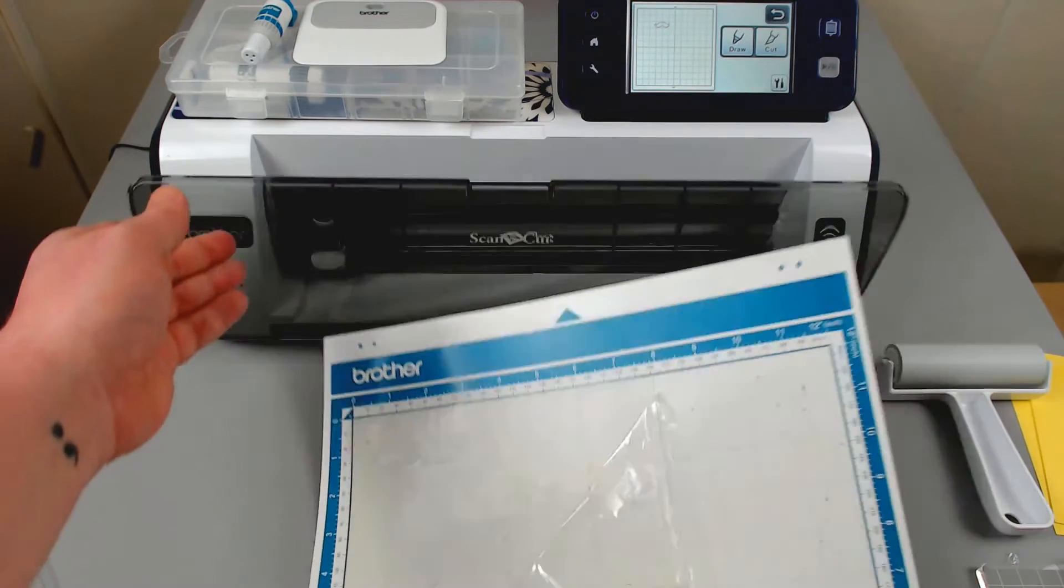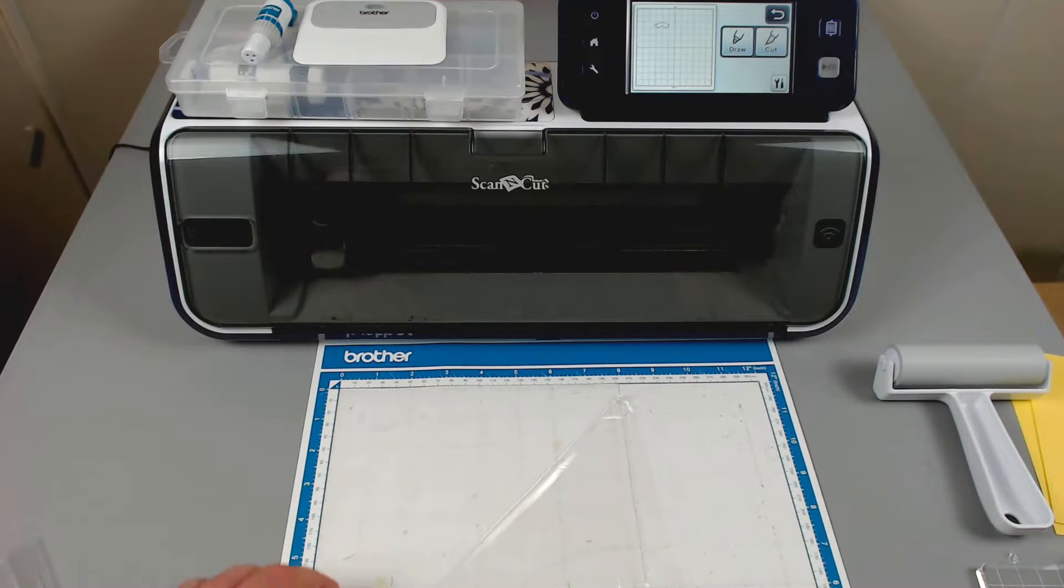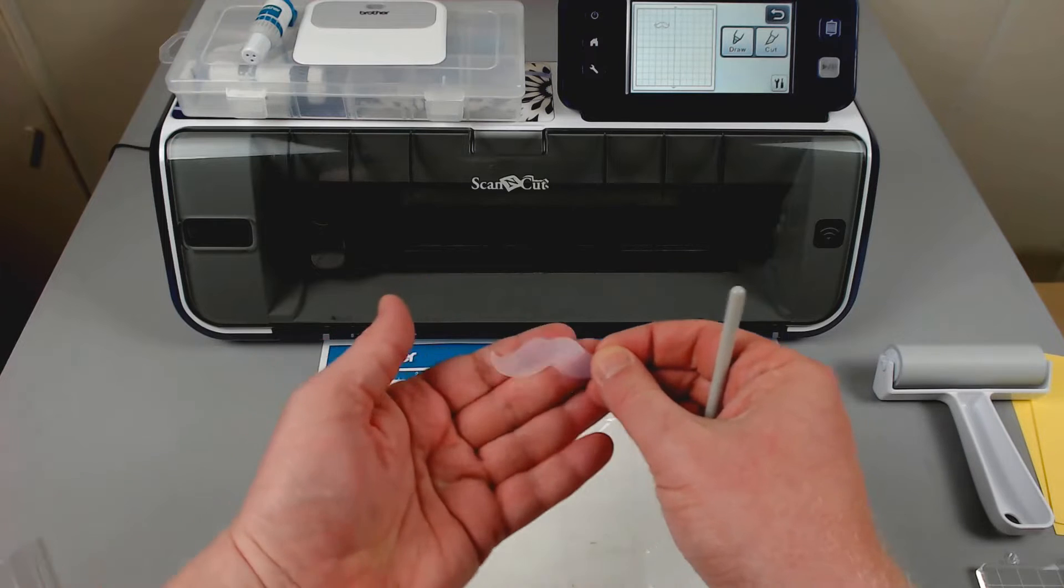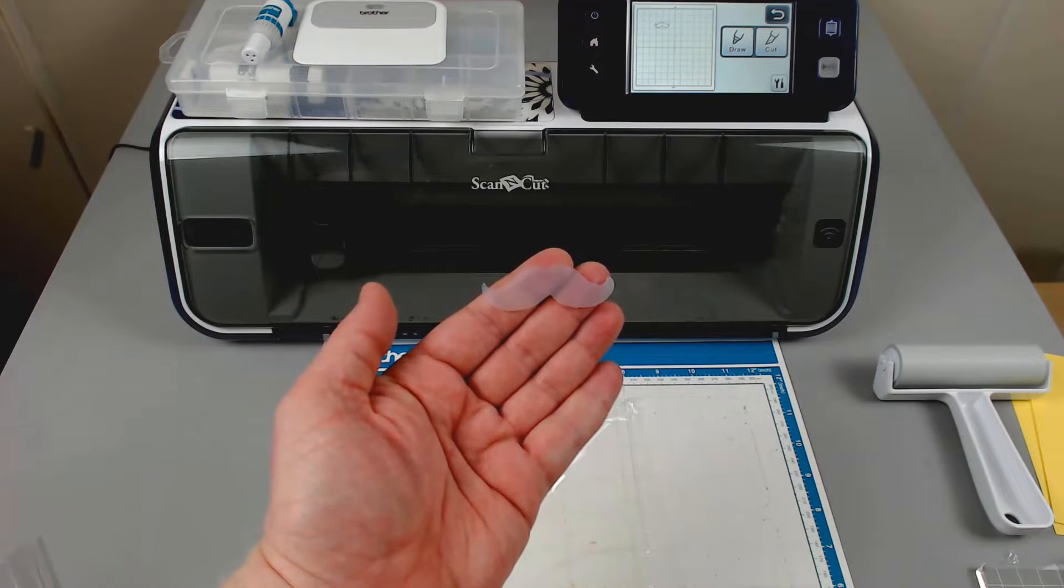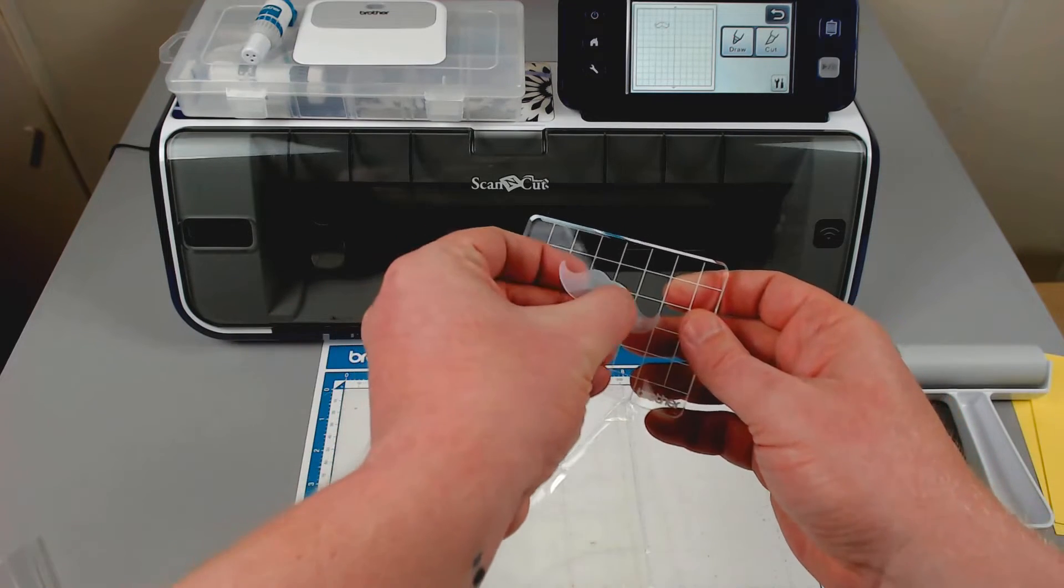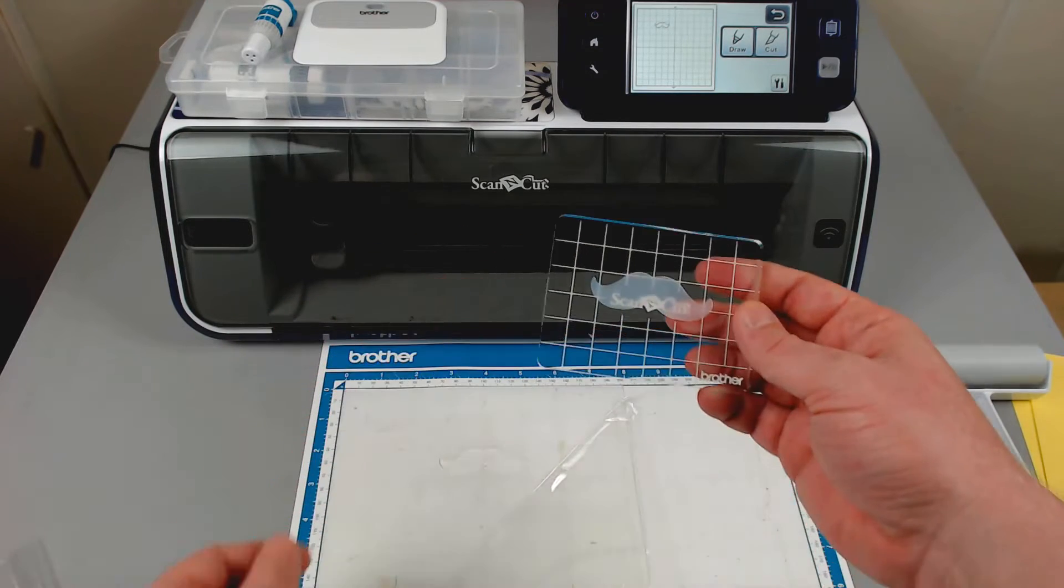Once complete, unload the mat and remove your stamp. This gets mounted onto your acrylic block.